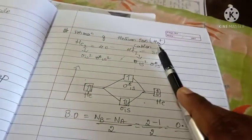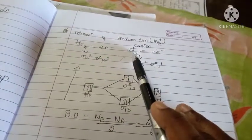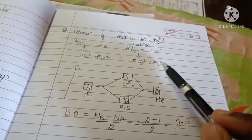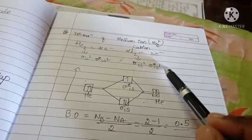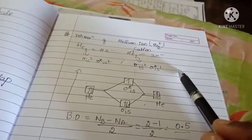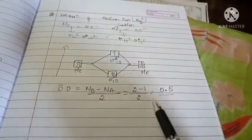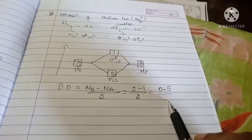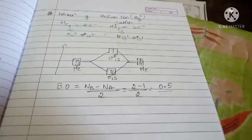When helium donates one electron, it forms a helium cation. In the helium molecule it has four electrons; in the helium cation it has three electrons. The electron is removed from the outer shell, so from sigma star 1s², one electron is removed, giving sigma star 1s¹. This is the electronic energy level diagram and the bond order is 0.5. So helium cation is stable compared to helium molecule. This is all about the last class.